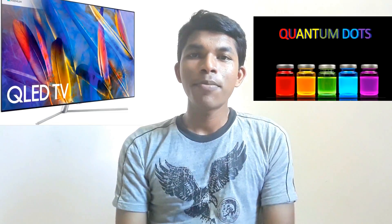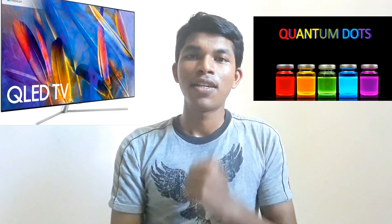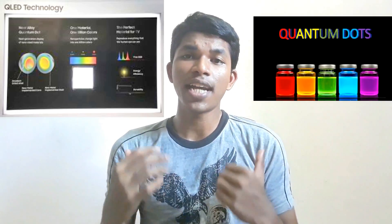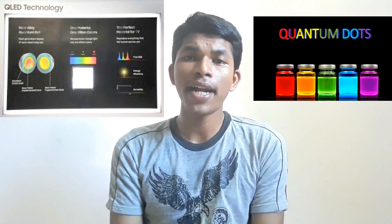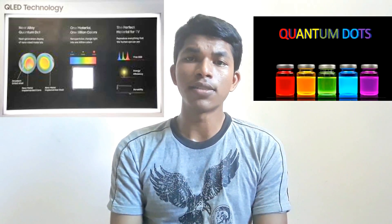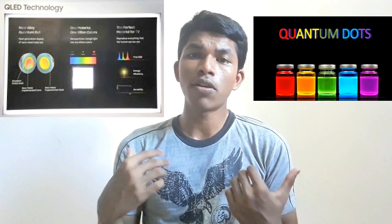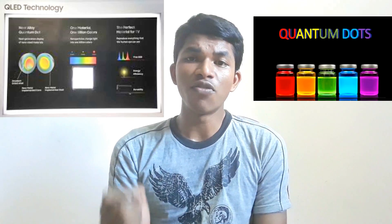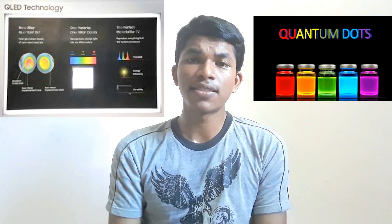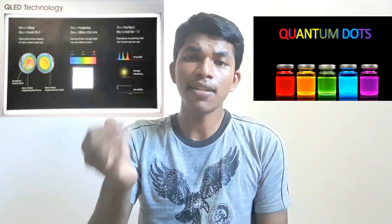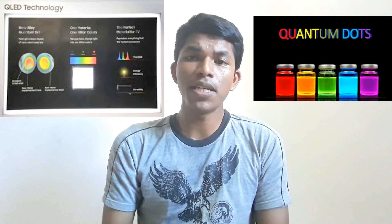Quantum dot display is a display device that uses quantum dot semiconductor nanocrystals which can produce pure monochromatic red, green, and blue light. Photoemissive quantum dot particles are used in a quantum dot layer which converts the backlight to emit pure basic colors. This improves display brightness and color gamut by reducing light losses and color crosstalk in RGB color filters.